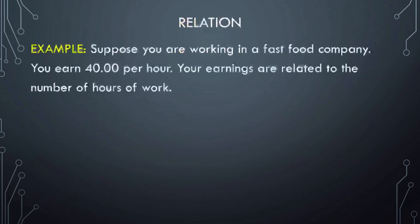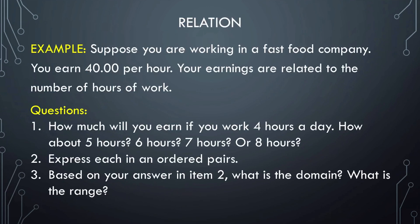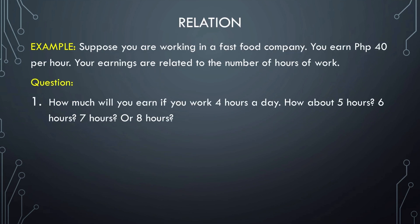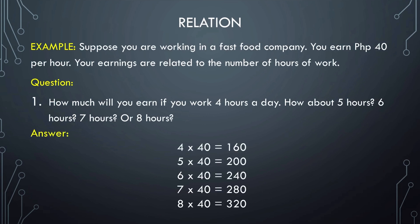Let's have an example. Suppose you are working in a fast food company and you earn 40 pesos per hour. Your earnings are related to the number of hours you work. How much will you earn if you work 4, 5, 6, 7, or 8 hours a day? To answer this, multiply the number of hours by 40 pesos. 4 hours × 40 = 160; 5 hours × 40 = 200, and so on. That is how your earnings and number of hours of work are related.